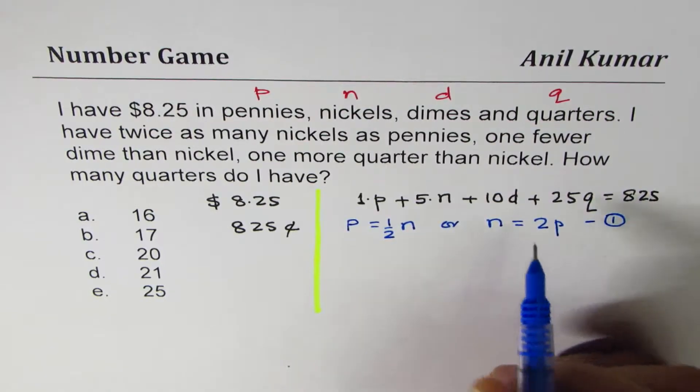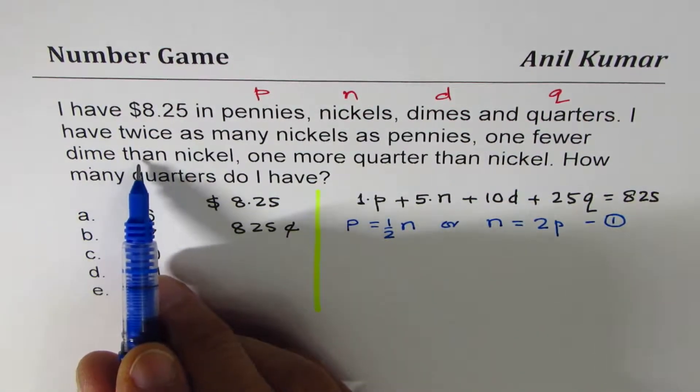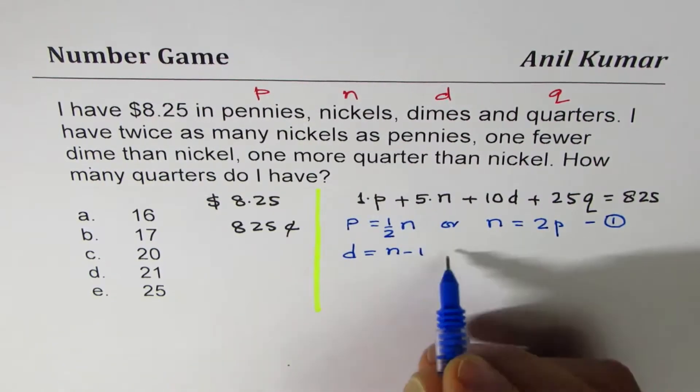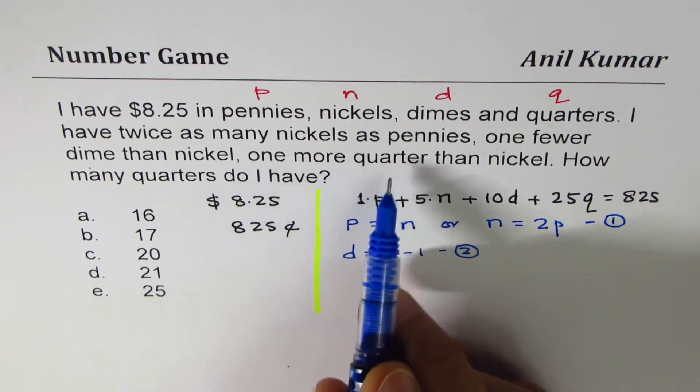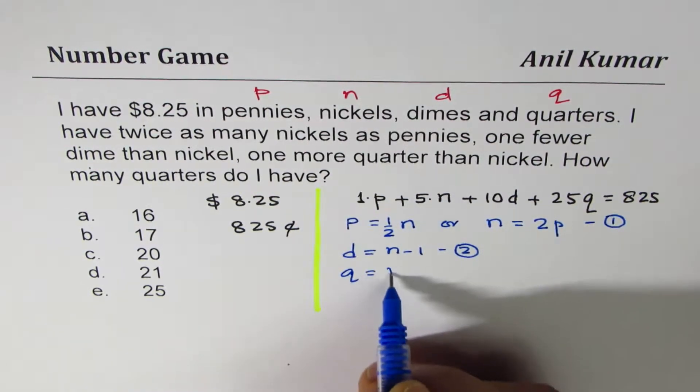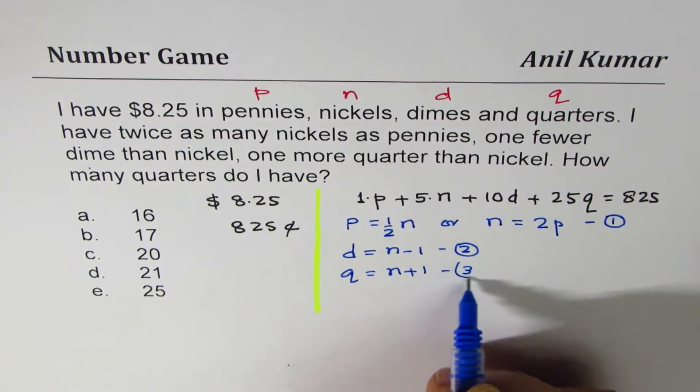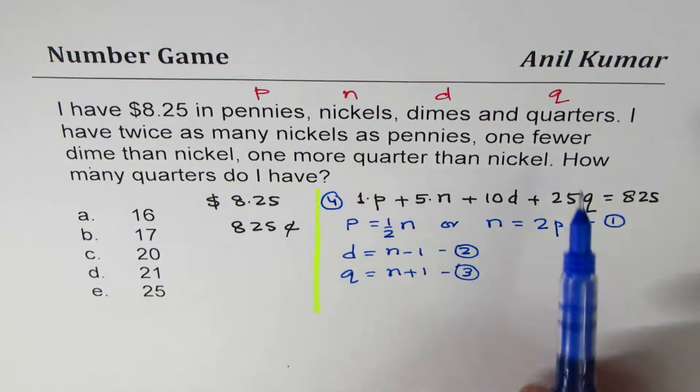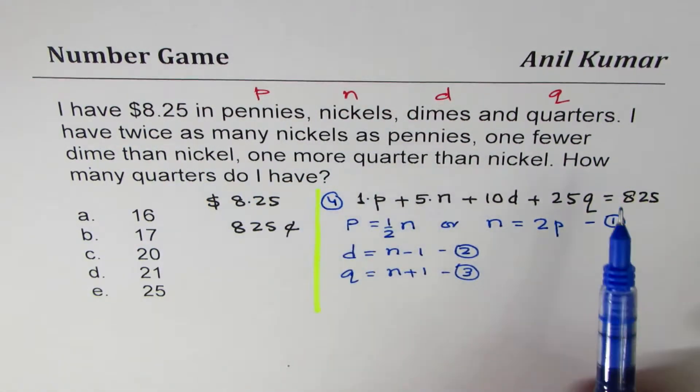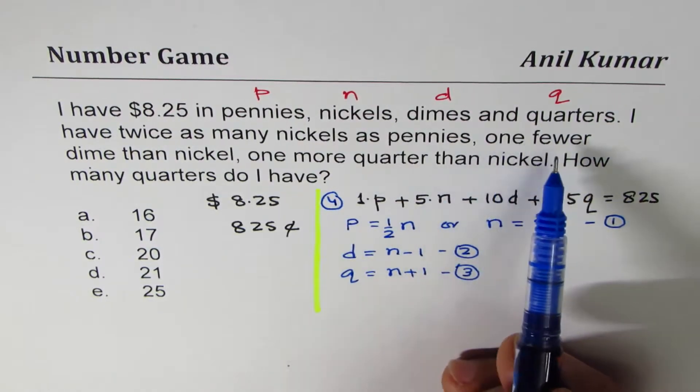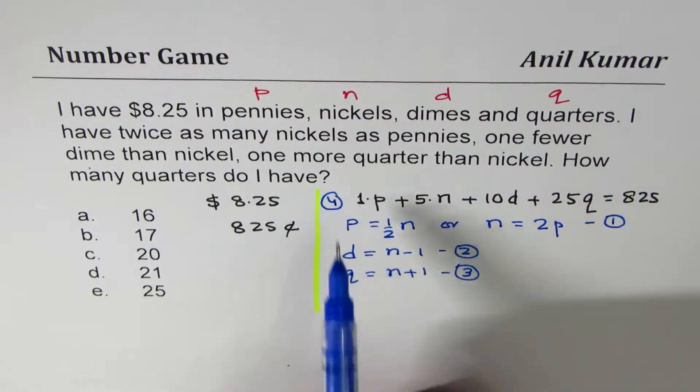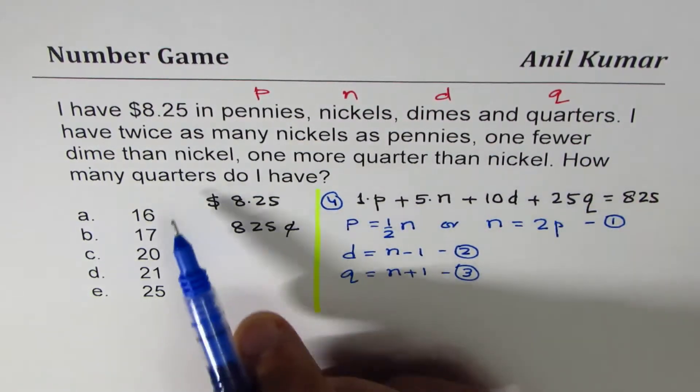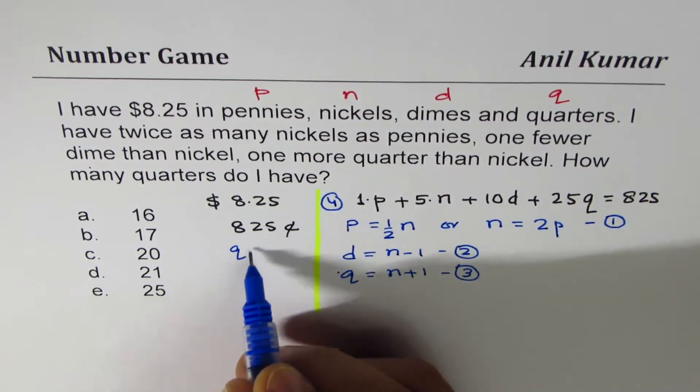One fewer dime than nickel. Dime is less than nickel by one, so dime is N minus 1. I'll call that my equation two. One more quarter than nickel. Quarters are more by one, so one more quarter than nickel, equation three. And the fourth equation I already have, this is my equation four. Now, I have twice as many nickels as pennies, so nickels are two times pennies. One fewer dime than nickel, dime is one less than nickel. One more quarter than nickel. Quarter is more than nickel by one. And how many quarters do I have? We have to find Q, the number of quarters.